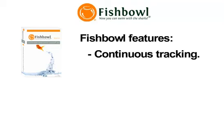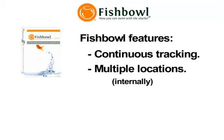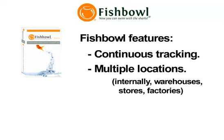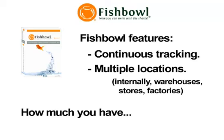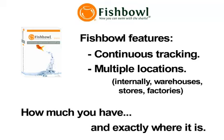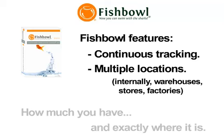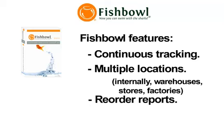Continuous tracking of your inventory at multiple locations within a given facility or across multiple warehouses, stores, or factories. Fishbowl tracks how much inventory you have on hand and exactly where it is located. Reorder the correct amount of product based on past history. Our reorder reports tell you how much to order and when to order it.